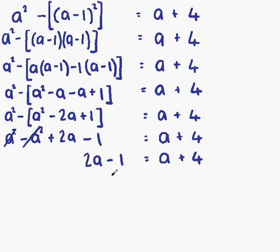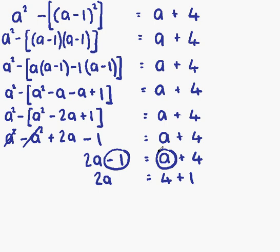Our next step is to put our letters on the left and our numbers on the right. Minus 1 needs to move, and a needs to move. We have 2a on the left and 4 on the right. Minus 1 changes side and becomes plus 1; positive a moves over and becomes negative a. So 2a minus a is a, and 4 plus 1 is 5. We have solved for a: a equals 5, and that's our final answer.